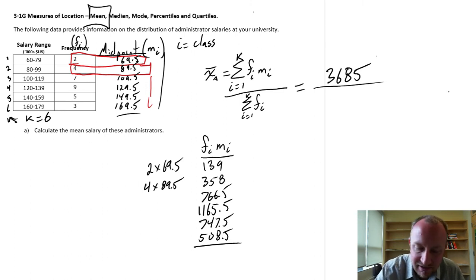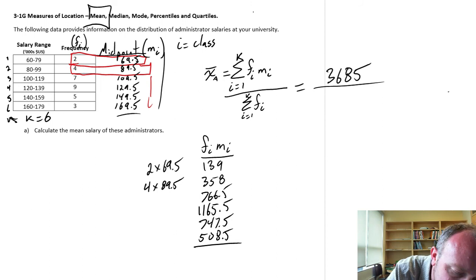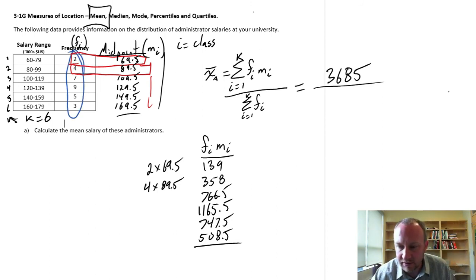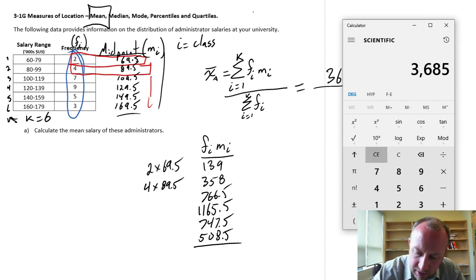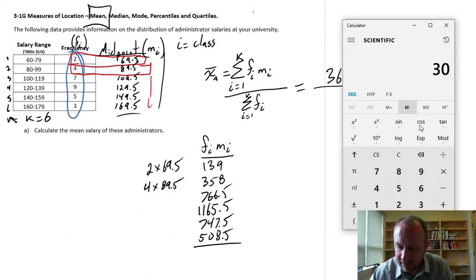Now my denominator is the sum of frequencies. So my denominator, I'm just going to add together all of these values here. So this is going to be 2 plus 4 plus 7 plus 9 plus 5 plus 3, which is 30.